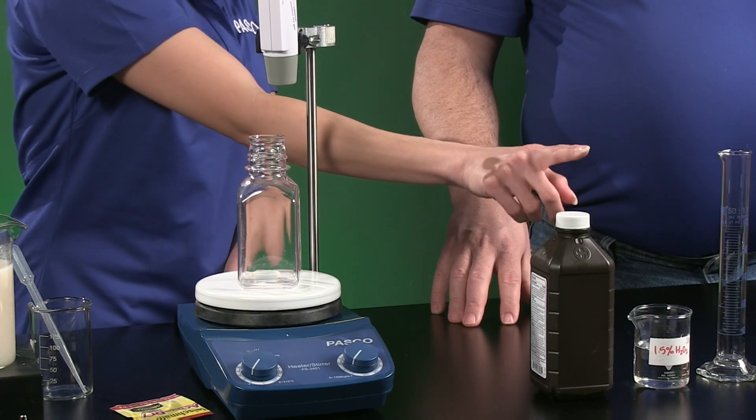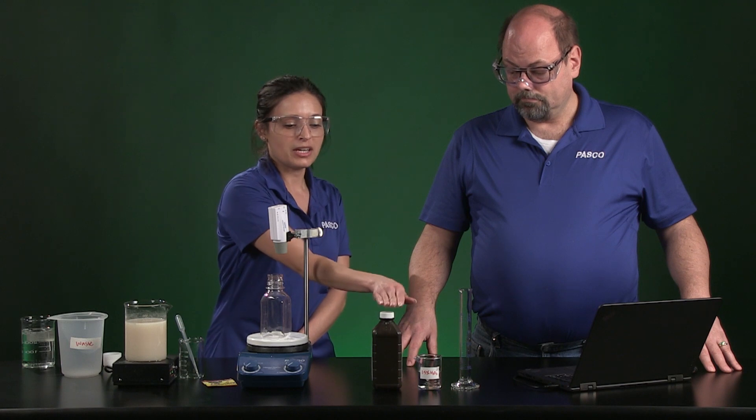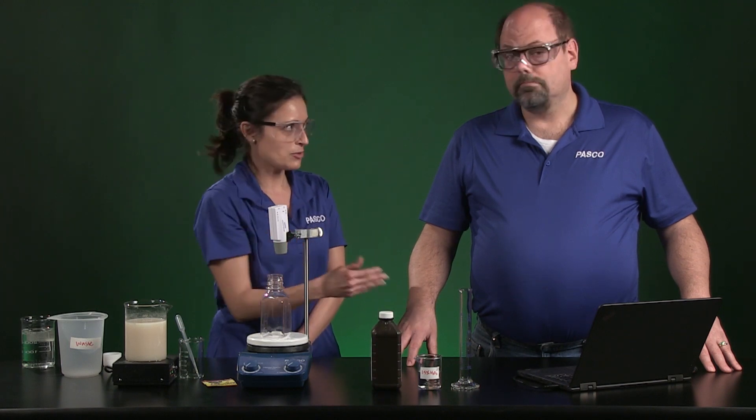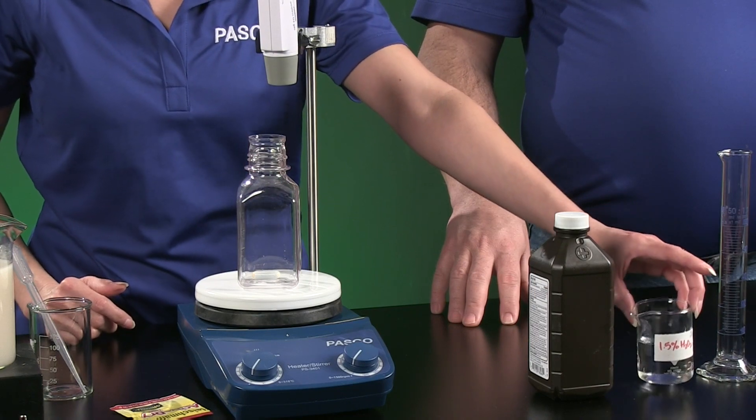The hydrogen peroxide solution, this is our substrate. This is the thing that we're breaking down. We got 3% hydrogen peroxide from the grocery store and diluted it to get 1.5% hydrogen peroxide.